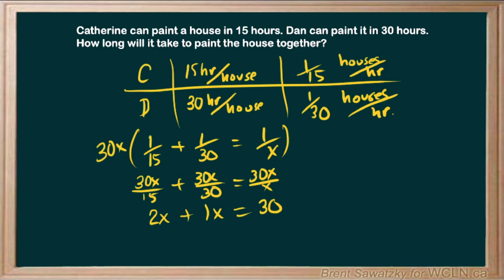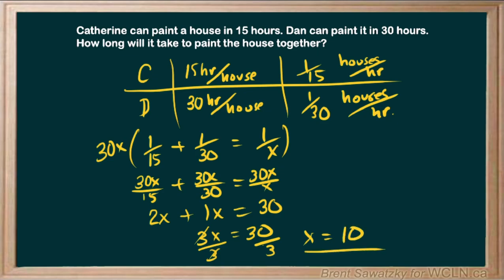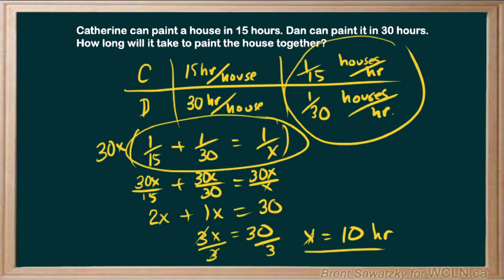Bringing those together: 3X equals 30. Dividing both sides by 3, we get X equals 10. Our X represents the number of hours it takes for them as a team to finish one house, so the answer is 10 hours. When looking at rates and people working together on a project — whether it's painting a house or whatever — look at the reciprocals, then set up an equation where their added rates equal the group rate.